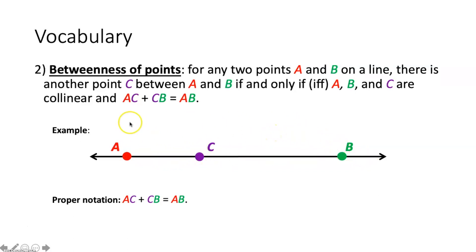Notice that when I say 'the measure of segment AC' and 'the measure of segment CB,' there's no line segment symbol above those. If there were a line segment symbol, I would say 'segment AC plus segment CB.' But without the symbol, it means it's the measure of segment AC plus the measure of segment CB.